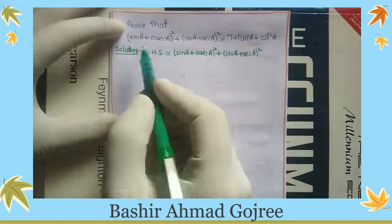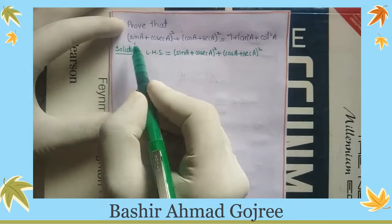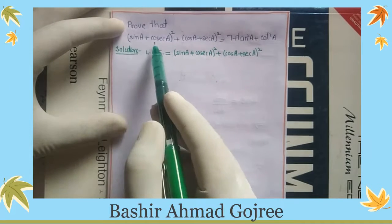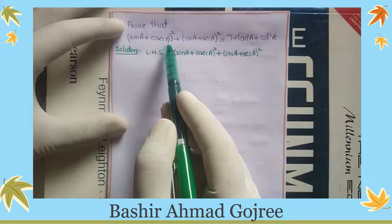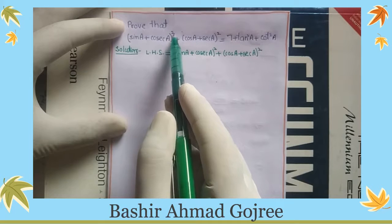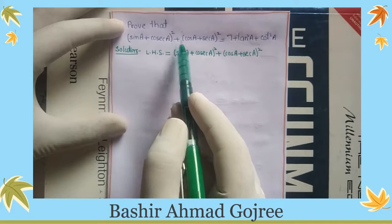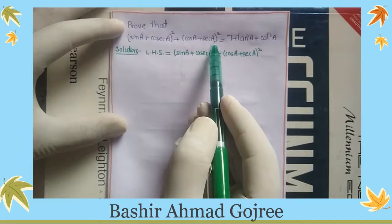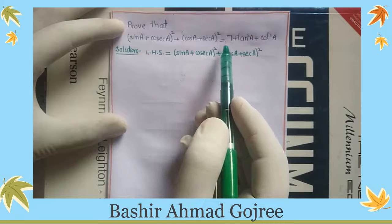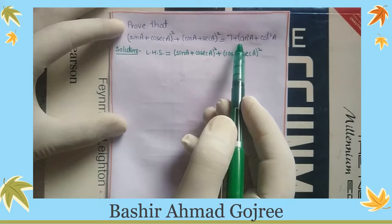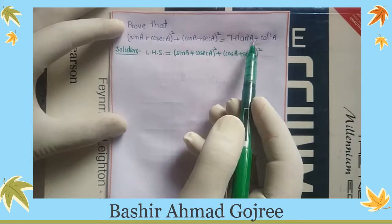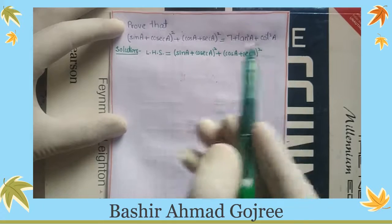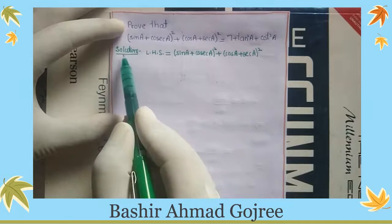Friends, we will prove how (sin A + cos A) whole square plus (cos A + sec A) whole square is equal to 7 plus tan square A plus cos square A.